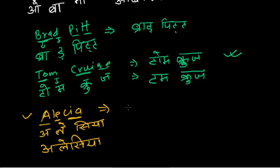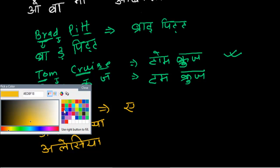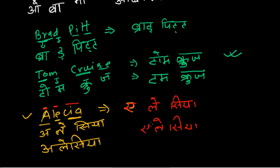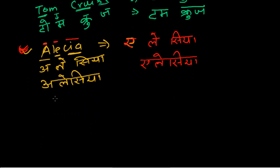For the pronunciation 'Alicia,' it will be written slightly differently: this 'a' produces the short 'a' sound, then 'lay,' then 'sha' — so it becomes 'Alicia.' Alicia is actually my sister-in-law living in North Carolina — she's pretty good, and I think she'll be happy when she sees this video!